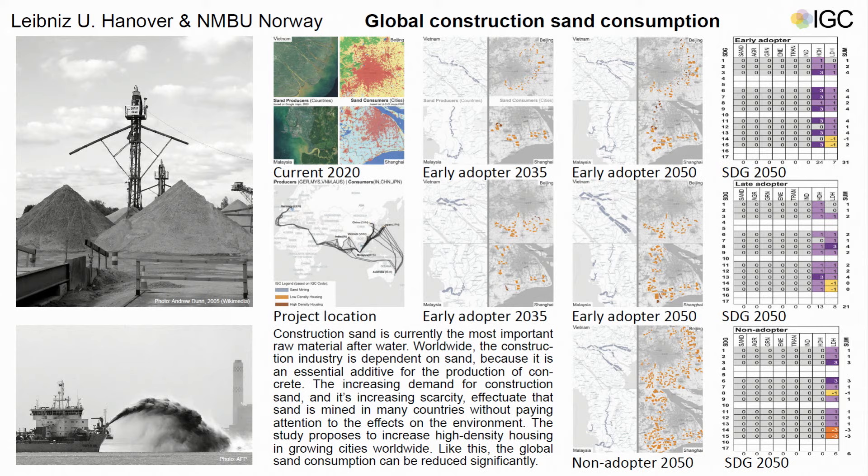We understand our contribution as a test of a geodesign attempt related to a global issue. We calculated the expected sand demand of the three largest cities of China, India, and Japan. We took that 40% of the construction sand is sourced from Vietnam, 25% from Malaysia, 25% from Australia, and 10% from Germany.